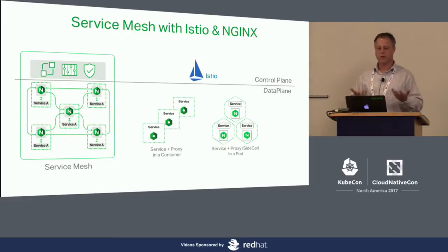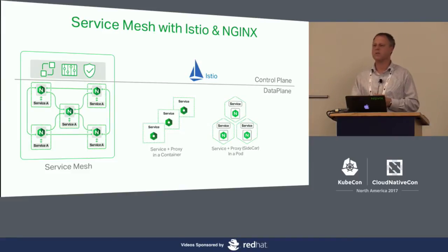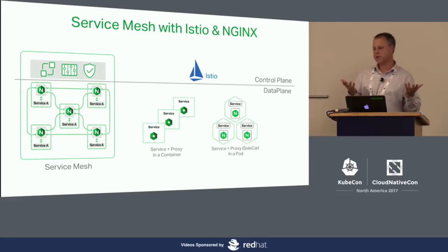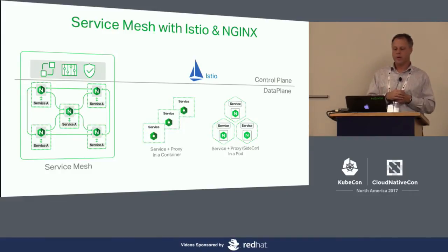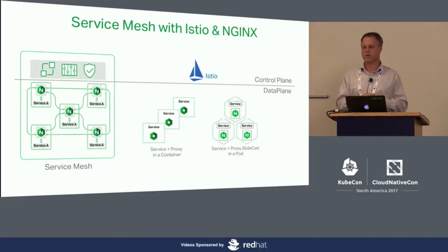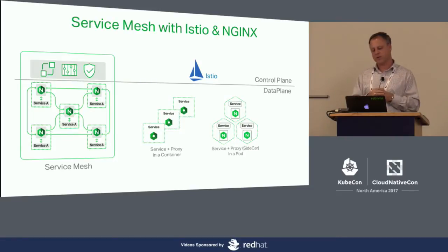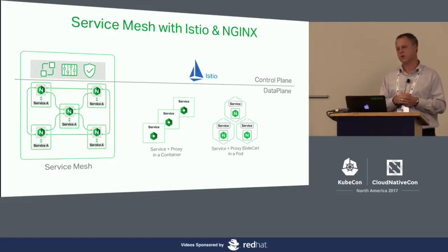The whole presentation today is going to be around services mesh going forward. In the services mesh, you have a control plane as described in various other sessions today. In the Istio control plane, you have three components: pilot, mixer, and auth — which enable you to provision the services mesh data plane, monitor it, and secure it. I'm going to spend most of the time looking at the services mesh on the data plane.